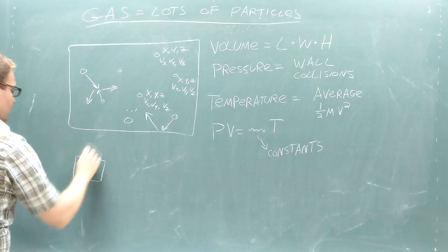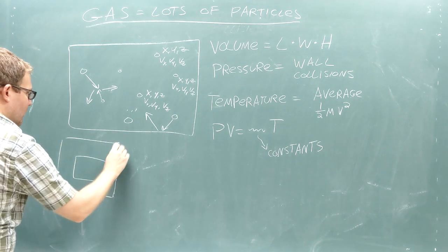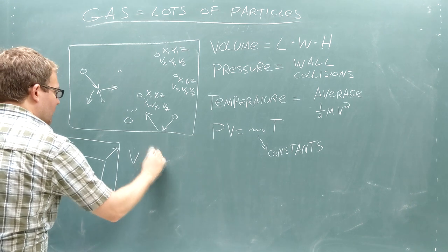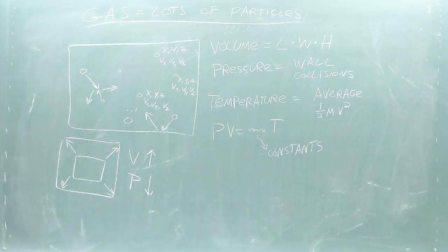The ideal gas law says that if you increase the volume, meaning you allow the gas to expand, while the temperature stays consistent, the pressure must decrease. This makes sense because the particles won't be striking the walls of the box as frequently.